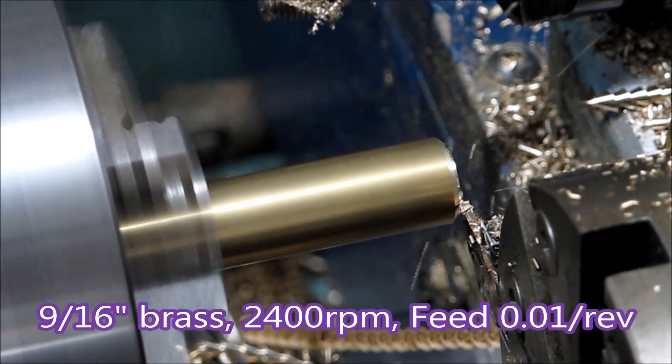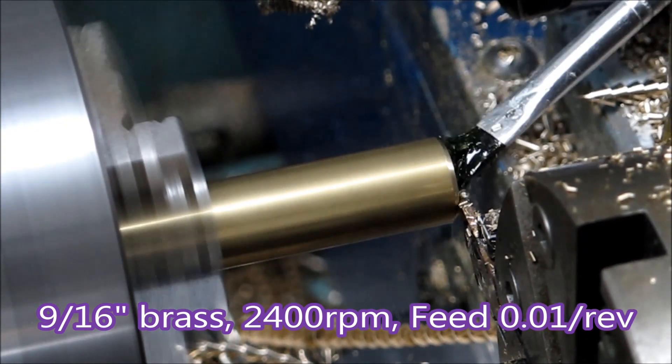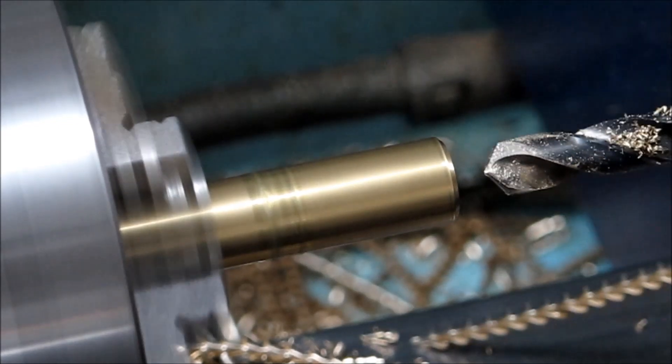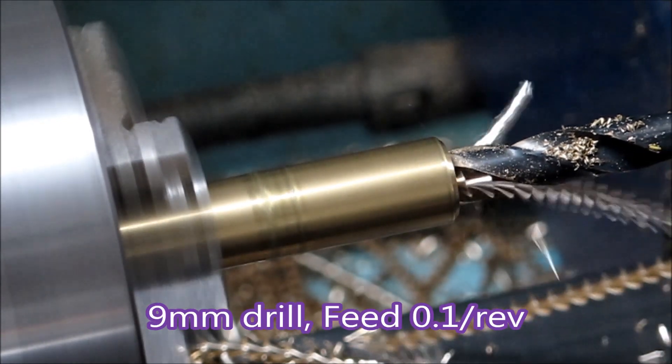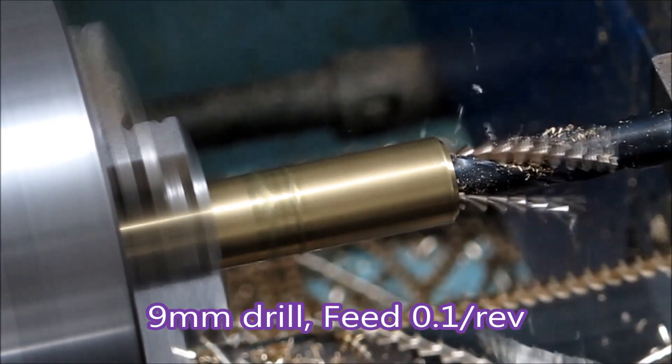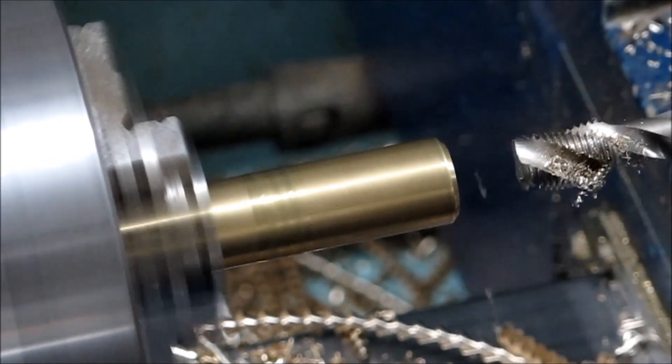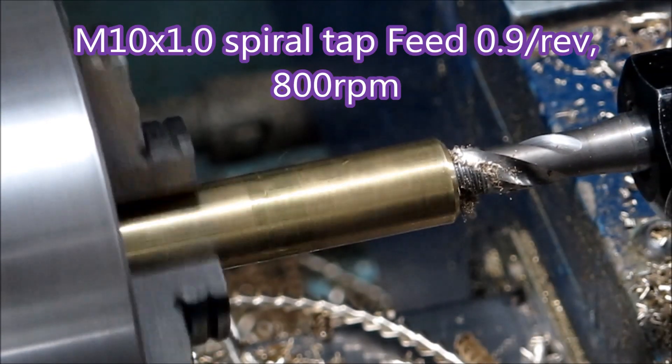That's a chamfer, the parting tool is putting on and then facing it off. Actually there it didn't face it off all the way to the centre. It's just faced off to 8mm so the drill removes the facing so I didn't see any point in wasting time with it.